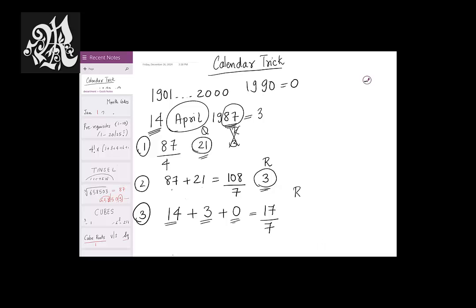Divide this 17 by 7. Write the remainder down, 3. And that's the day you want it. So how? How is 3? How do you decode 3?